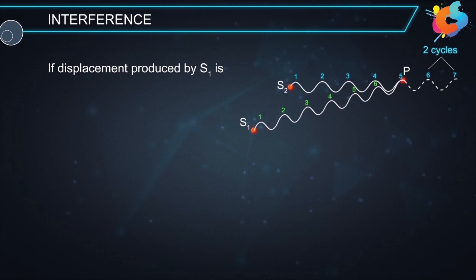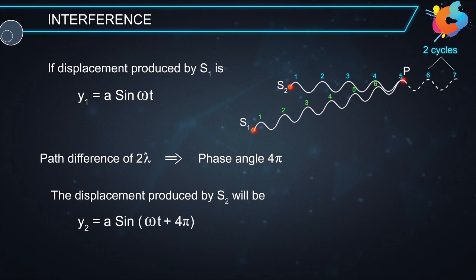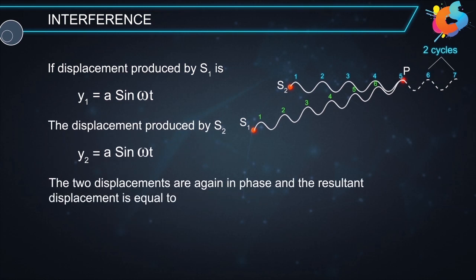This means that the waves coming from S1 will arrive exactly 2 cycles later than the waves from S2. If the displacement produced by S1 is y1 = a sin(ωt), since a path difference of 2λ corresponds to a phase difference of 4π, the displacement produced by S2 is y2 = a sin(ωt + 4π) = a sin(ωt). The two displacements are again in phase, and the resultant displacement is y = 2a sin(ωt) and intensity I = 4I₀.